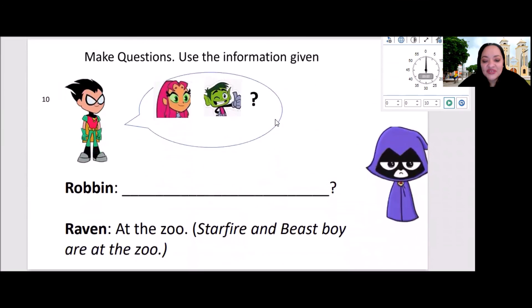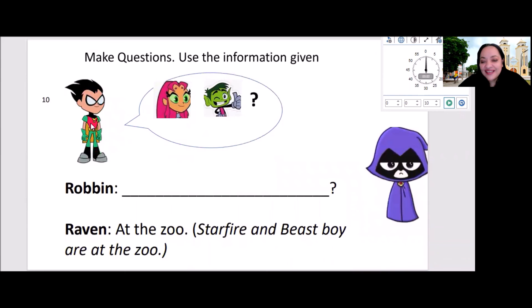So, finally, the last question is, Robin, this is Starfire and Beast Boy, and this is Raven. So, what is Raven answers at the zoo? Starfire and Beast Boy are at the zoo. What was the question? So, you got it. The question is, Where are Starfire and Beast Boy? Yes. If you guessed all my questions, then you got it, guys.